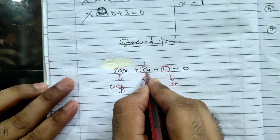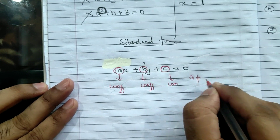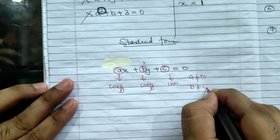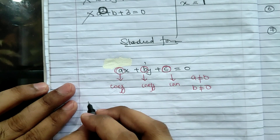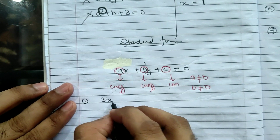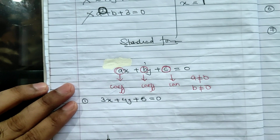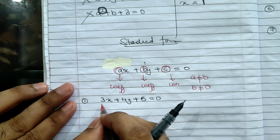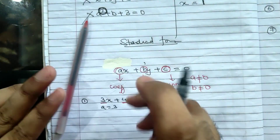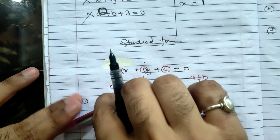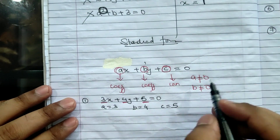The variables are x and y. There is one important rule: A cannot be equal to 0 and B cannot be equal to 0. C can be 0. For example, take 3x + 4y + 5 = 0. Here A = 3, B = 4, and C = 5. Since A and B are not equal to 0, this is a linear equation in its standard form.